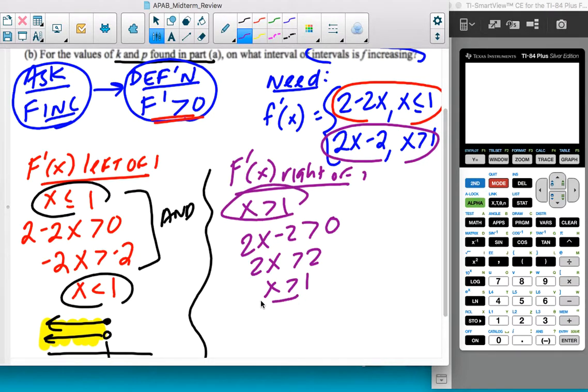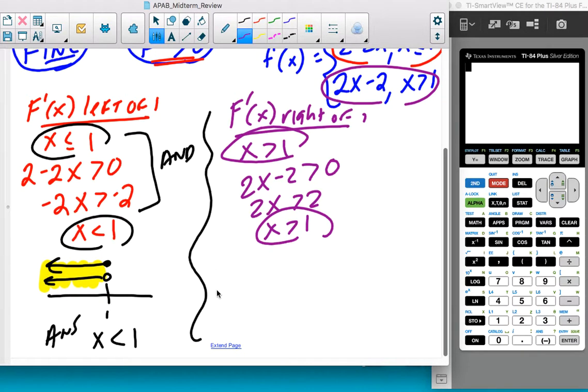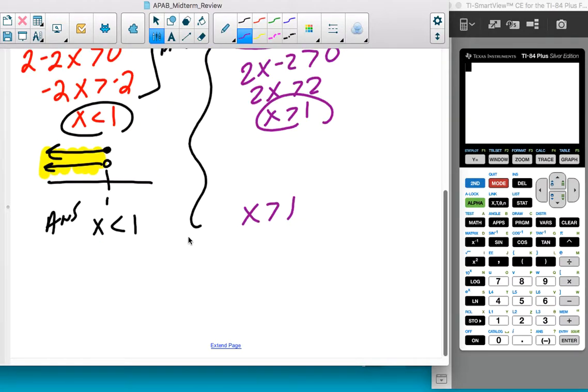Well, these are literally the same exact inequality. So I don't even have to graph them. This side is true for x is greater than 1. So the question is, what about at 1?